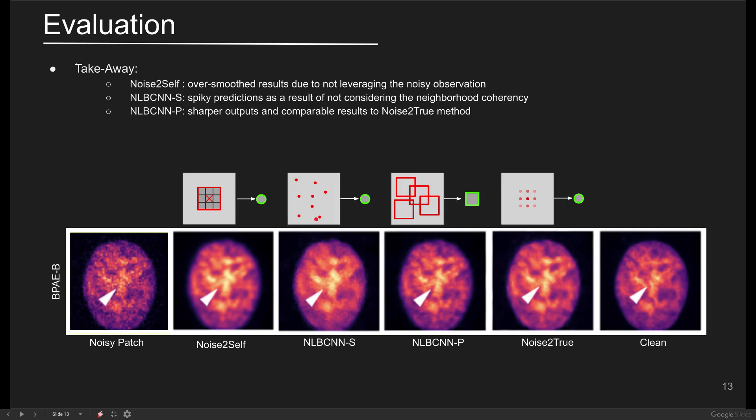NLBCNNS exploits the non-local similar pixels shown by red circles along with the observed noisy input to infer the denoised pixel. This leads to spiky predictions, which demonstrates the fact that the neighborhood consistency is not taken into account.